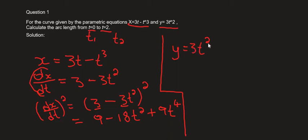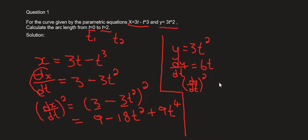For y, it says y is equals to 3t squared. You do the very same thing — differentiate. dy/dt equals 3 times 2, which gives 6t. Then we square it: (dy/dt) squared. That will be equals to 6 squared times t squared, which gives us 36t squared.